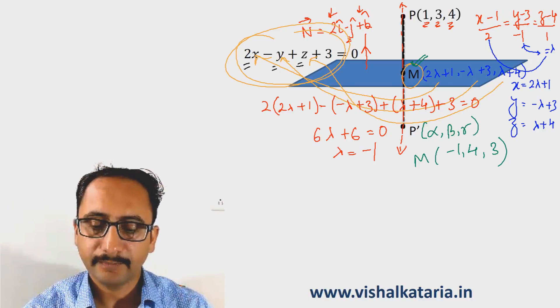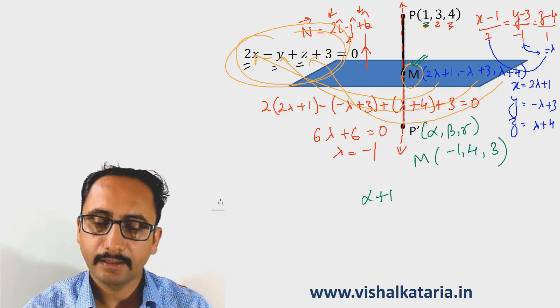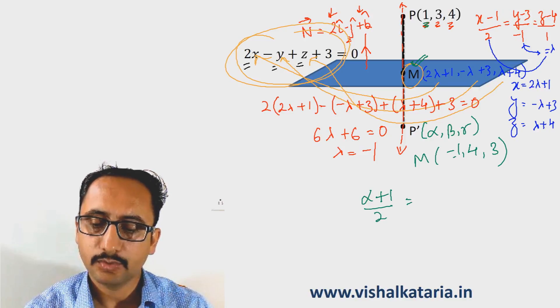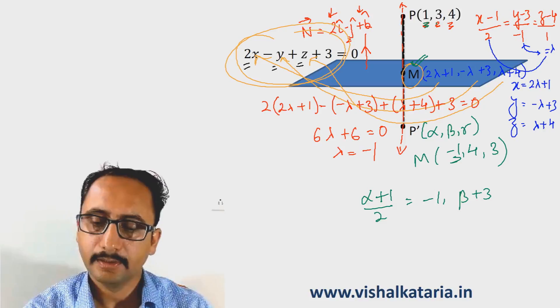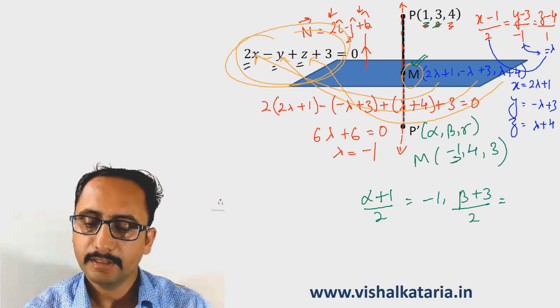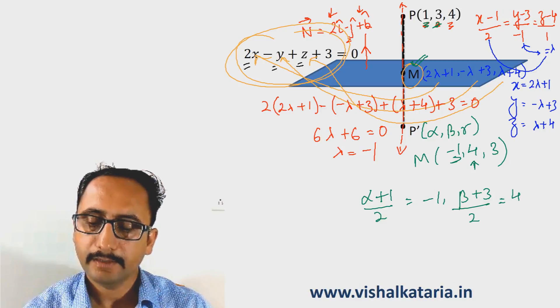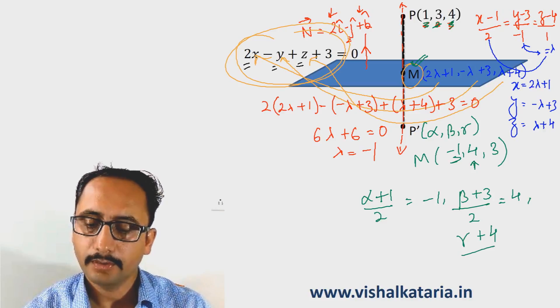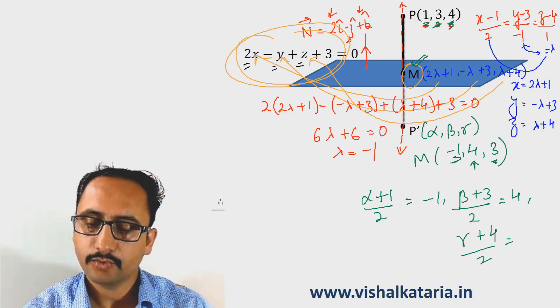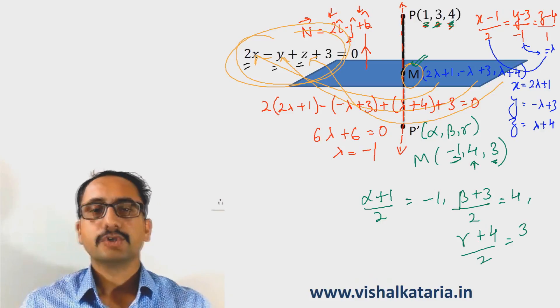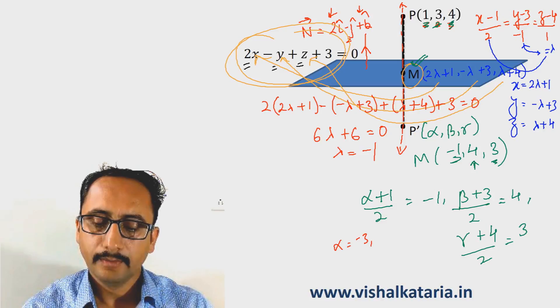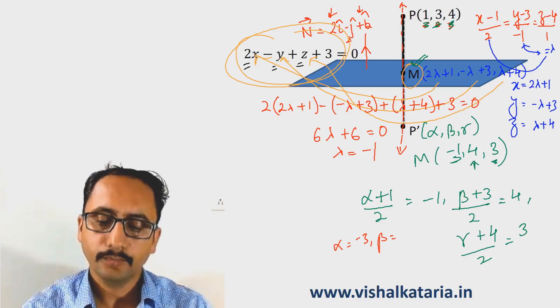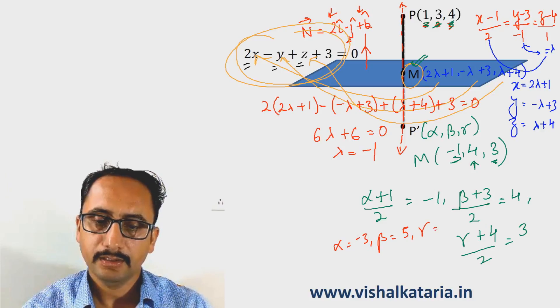We get (α + 1)/2 = -1, (β + 3)/2 = 4, and (γ + 4)/2 = 3. Solving these three equations, we get α = -3, β = 5, and γ = 2.